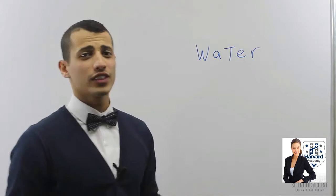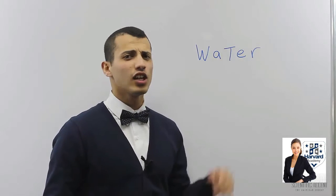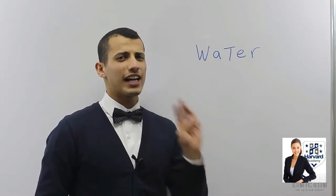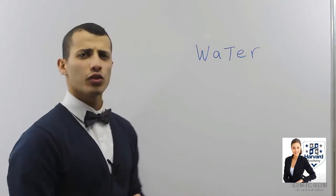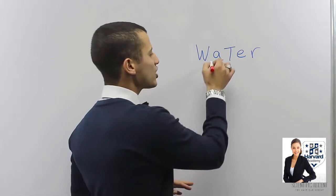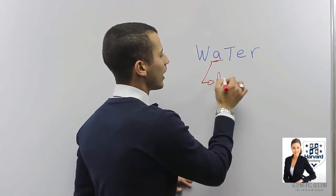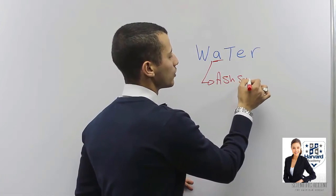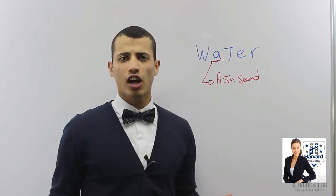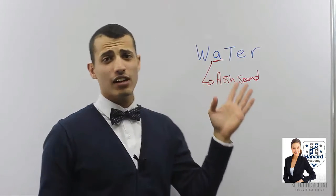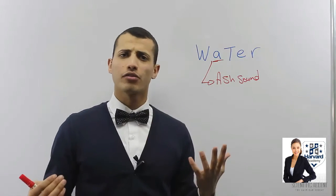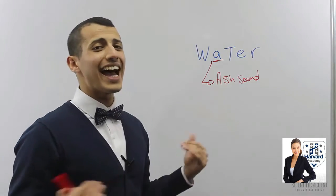Of course, the correct pronunciation is 'water.' And why is that? Well, in this word we just have three rules. The first rule is this A — it's called the ash sound. What is the ash sound? Basically it's the A sound, but it's like 'æ'. The sound comes from your throat, so we say 'wa,' not 'wo.'